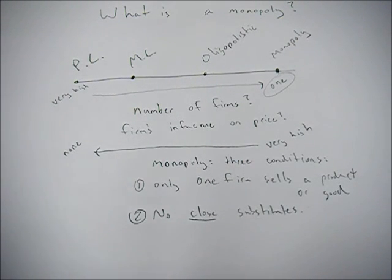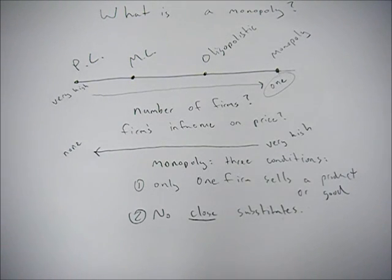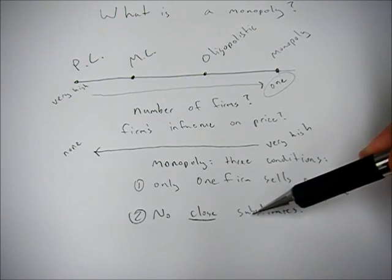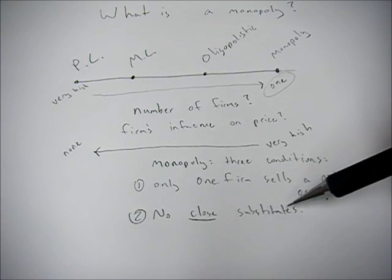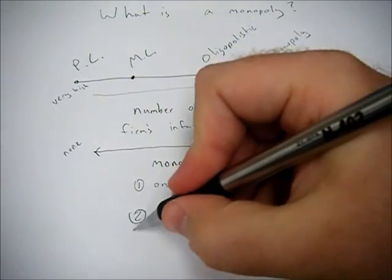If the price of bottled water got really high, you might start drinking water out of the tap. So just because you can't think of any good substitutes doesn't mean there aren't close substitutes. They really have to monopolize not only that one good, but a section of that good. They have to have control over all the close substitutes in order for it to be meaningful.